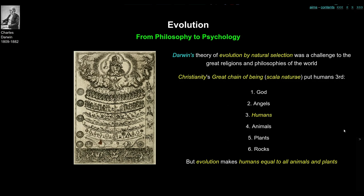Christianity had a notion of the great chain of being — Scala Naturae in Latin. In this great chain of being, God was at the top, with bands of angels above in the clouds. On the third row down were humans, sinful and wandering around the earth. Below humans were animals, below animals were plants, and at the very bottom were rocks and minerals. In Christianity's view, humans were in third place, with animals, plants, and rocks below us.